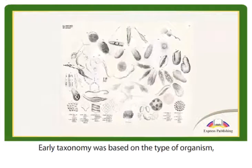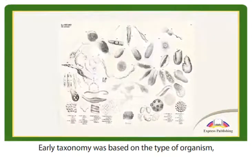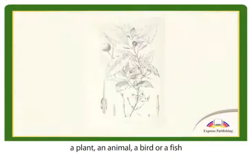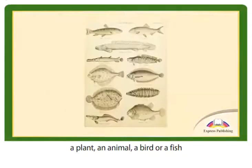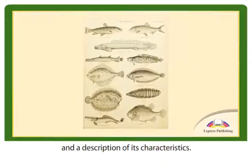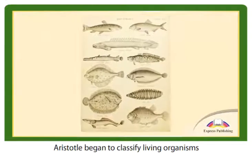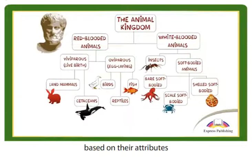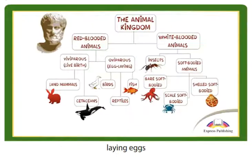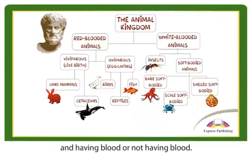Early taxonomy was based on the type of organism — a plant, an animal, a bird, or a fish — and a description of its characteristics. Aristotle began to classify living organisms based on their attributes, such as giving birth to live young, laying eggs, and having blood or not having blood.